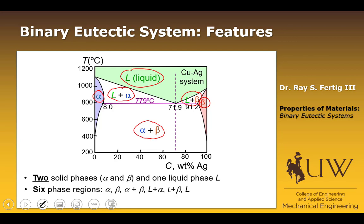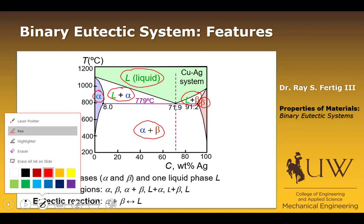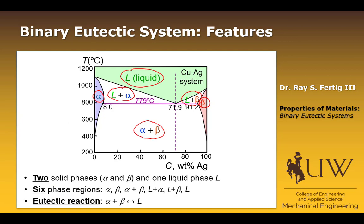The reason we call it a eutectic system is because of what's called a eutectic reaction. The eutectic reaction occurs at 71.9 weight percent in this system, where we have alpha plus beta. If we're heating it up, at that point both alpha and beta melt and become a liquid. In contrast, if we were in a liquid state and cooling down, as soon as we cross this point the liquid would separate into alpha and beta. That is the eutectic reaction — alpha and beta go to liquid, or liquid goes to alpha and beta.